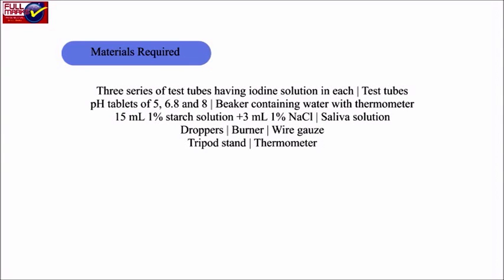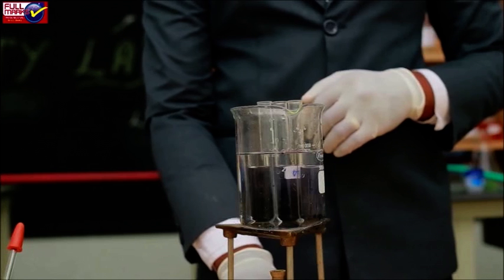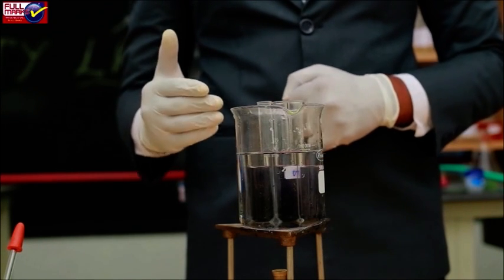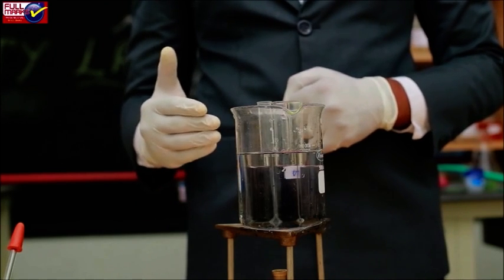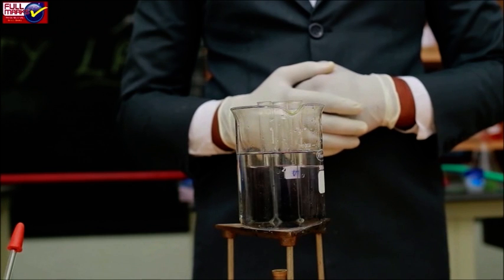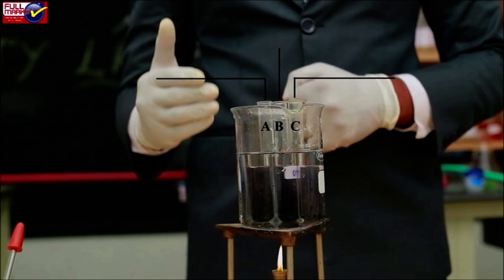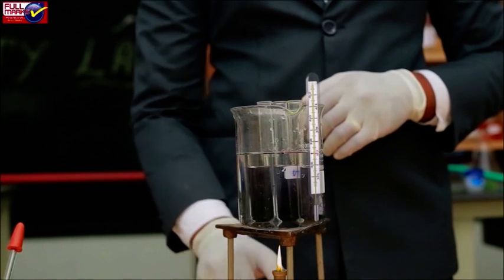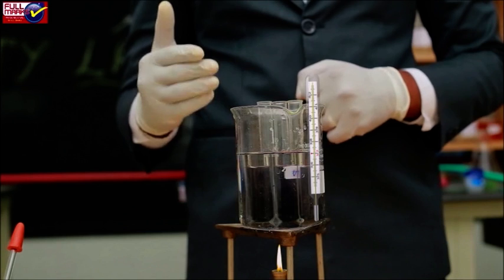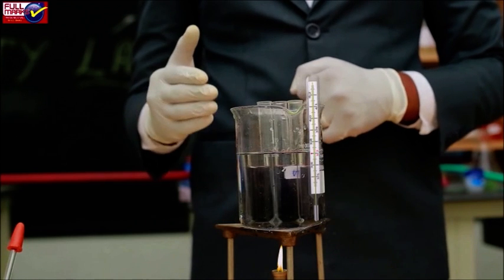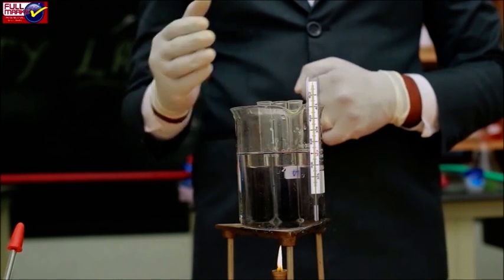Procedure: Take a beaker containing 15 ml of 1% starch solution plus 3 ml of 1% NaCl solution. Divide and pour the solution into 3 test tubes and mark them as A, B, and C respectively. Add pH tablet 5 into test tube A, pH tablet 6.8 into test tube B, and pH tablet 8 into test tube C. Transfer experimental tubes A, B, and C into a beaker containing water and a thermometer for recording temperature. Temperature of this beaker is to be maintained at 37 degrees Celsius.